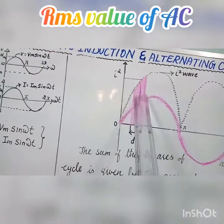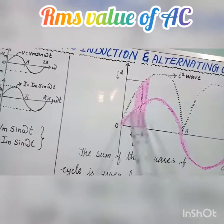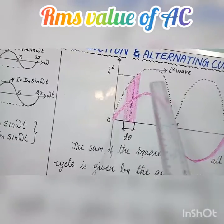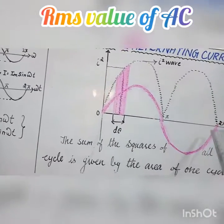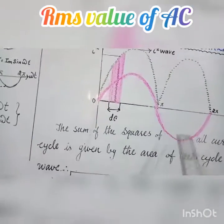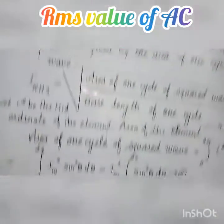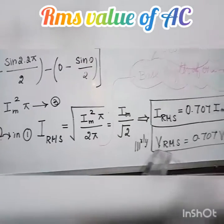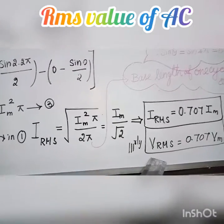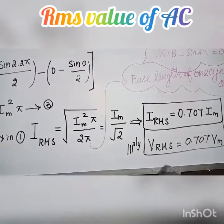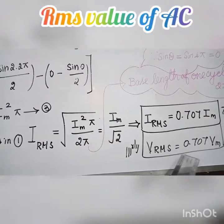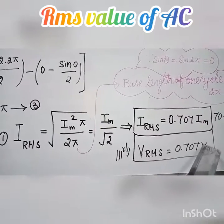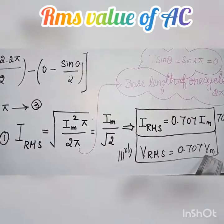Similarly, for the alternating voltage, it can be shown that V_RMS = 0.707 × V_m, where V_m is the maximum (peak) voltage.